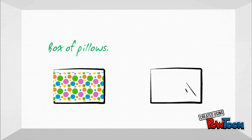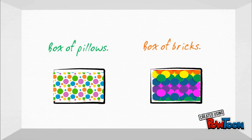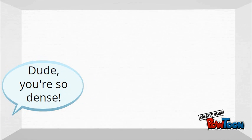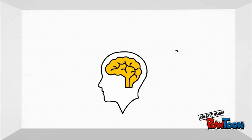Let's look inside the boxes at the atoms. The one with the pillows has atoms that are not tightly packed, so they are less dense — less density. The one with the bricks has atoms that are tightly packed, so it is more dense — more density. So remember, next time someone calls you dense, take it as a compliment — it must mean you have more gray matter in your head!